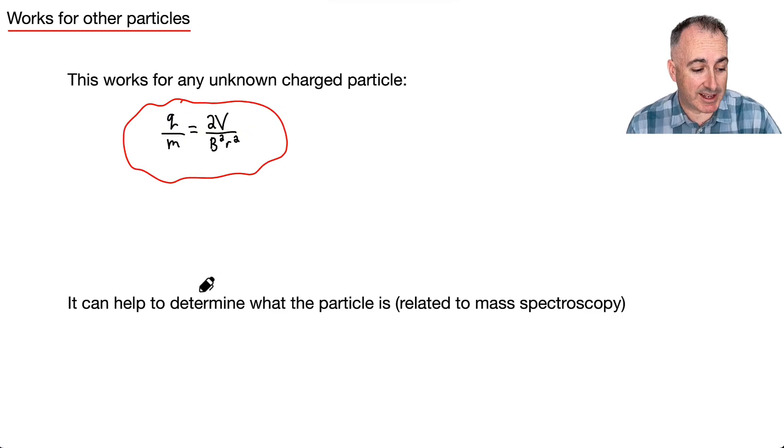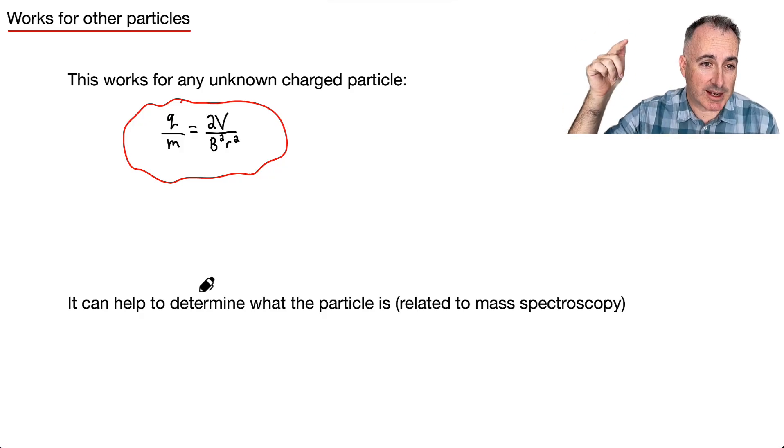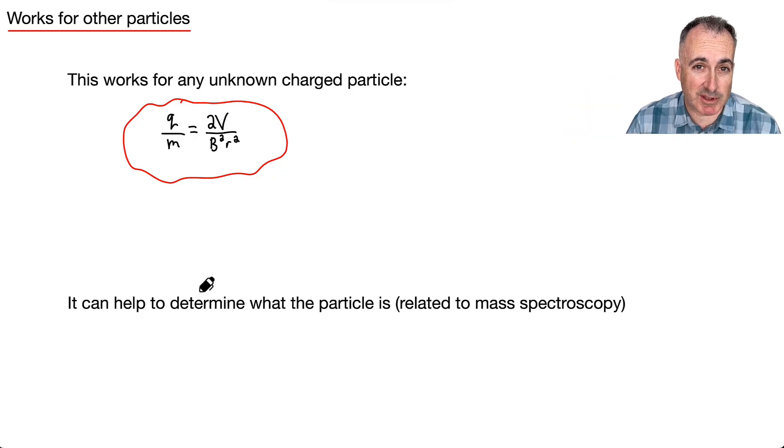If you don't know what a particle is, you have a mystery particle. If you run it through, if you know the potential difference, the magnetic field strength, and the radius of curvature, that's going to be tied to the charge-to-mass ratio. That helps scientists or even forensic analysts. You can tell what that particle is. That's related to mass spectroscopy.